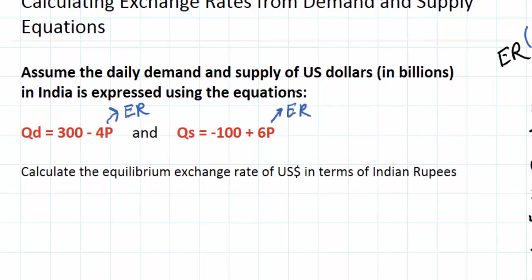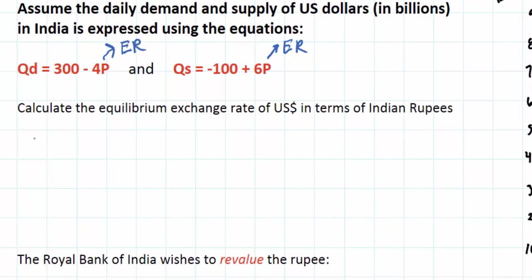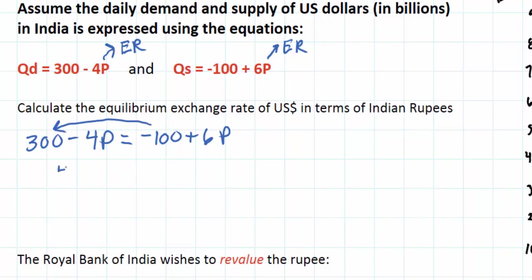These equations can be used to determine the equilibrium exchange rate of US dollars in India expressed in terms of rupees. To find that, all we have to do is set the two equations equal to each other. To find the equilibrium exchange rate we set 300 minus 4P equal to negative 100 plus 6P. We can solve this by moving the 100 over, giving us 400.